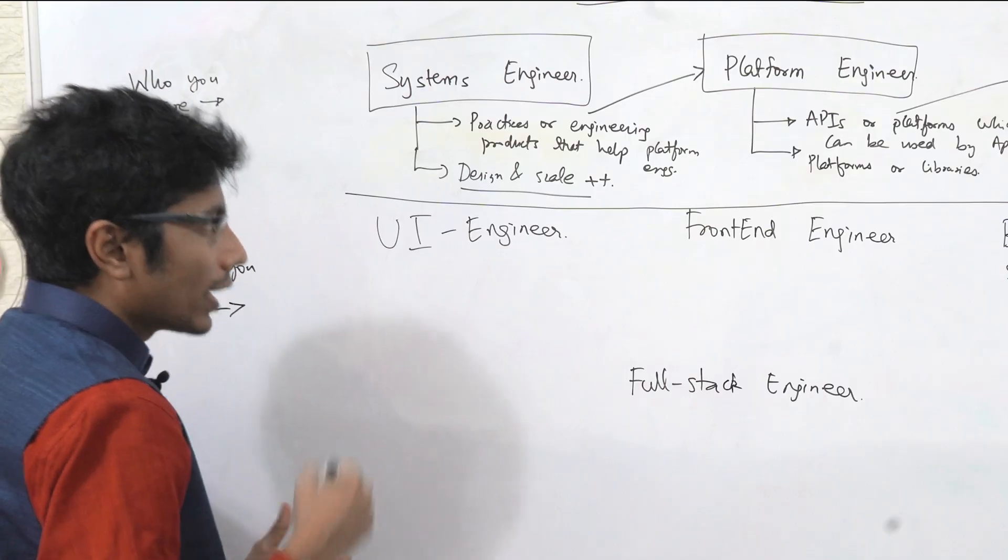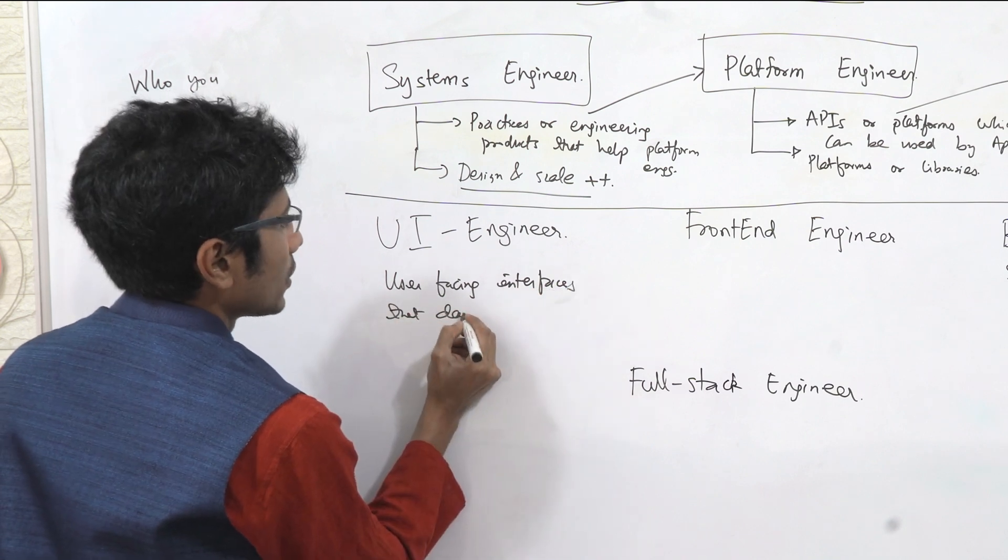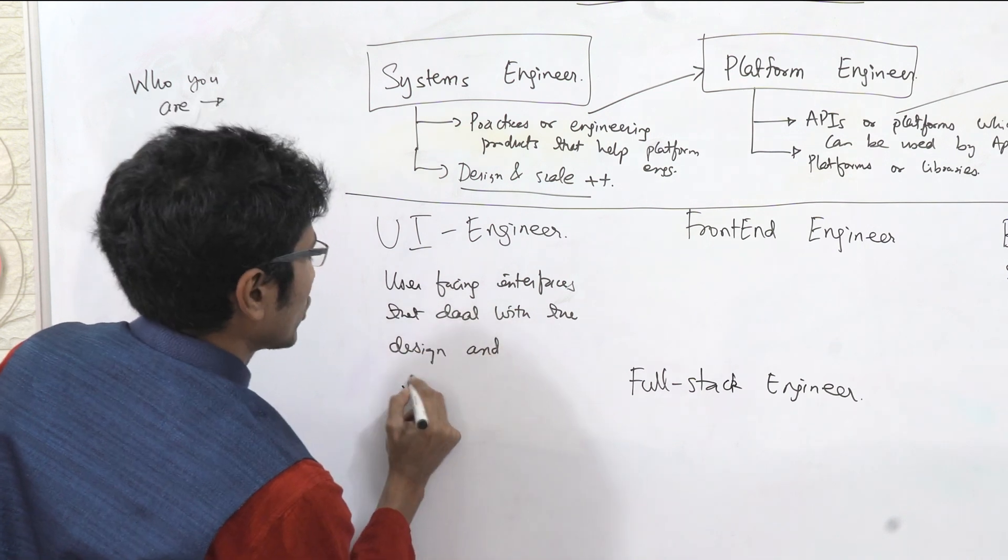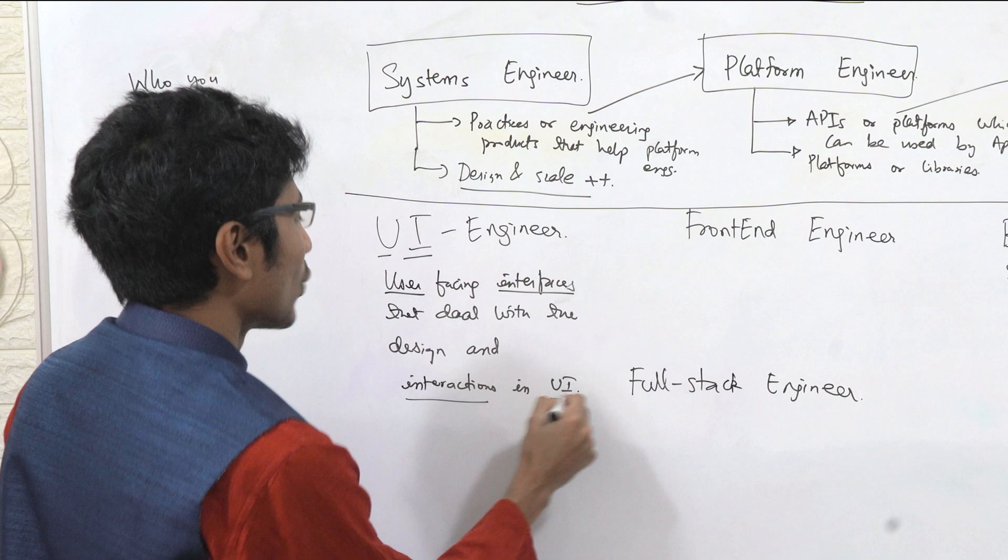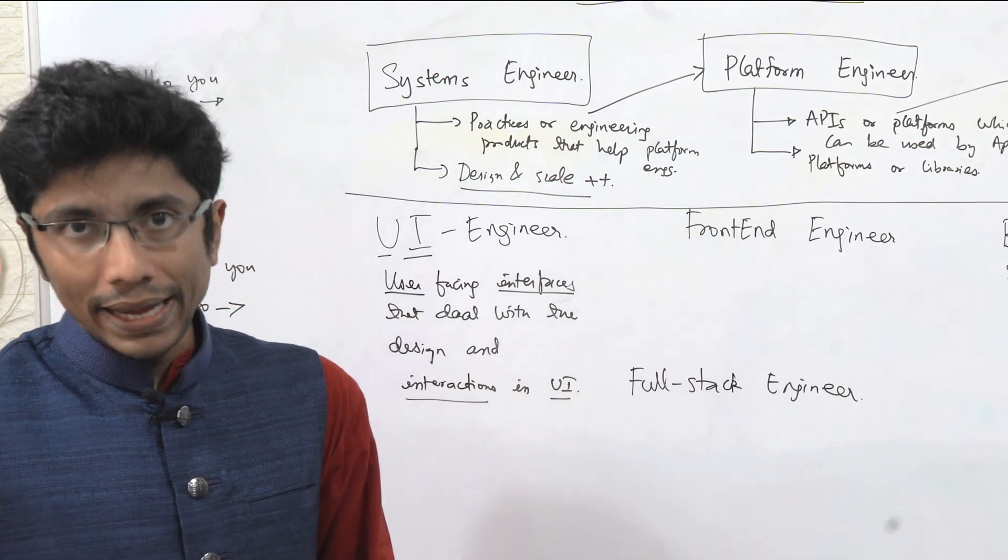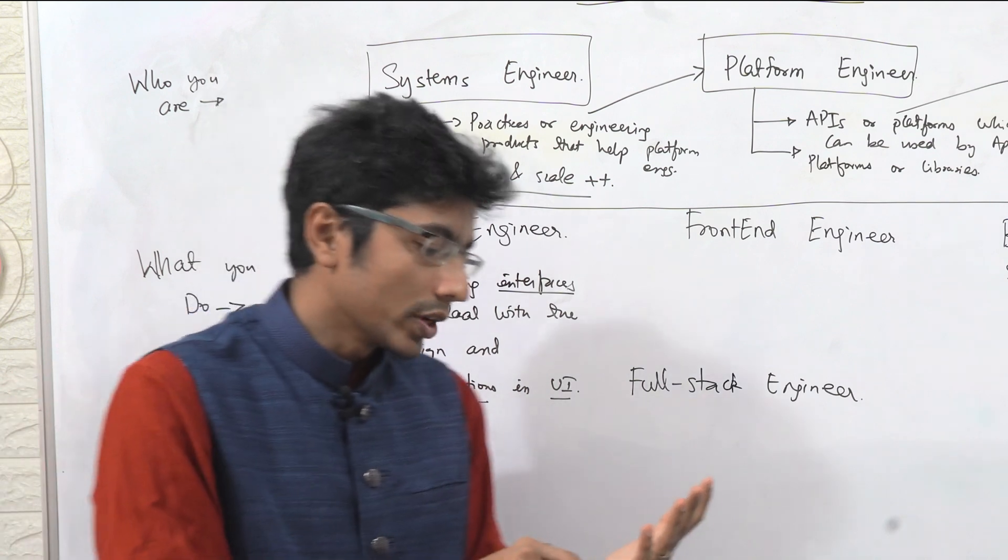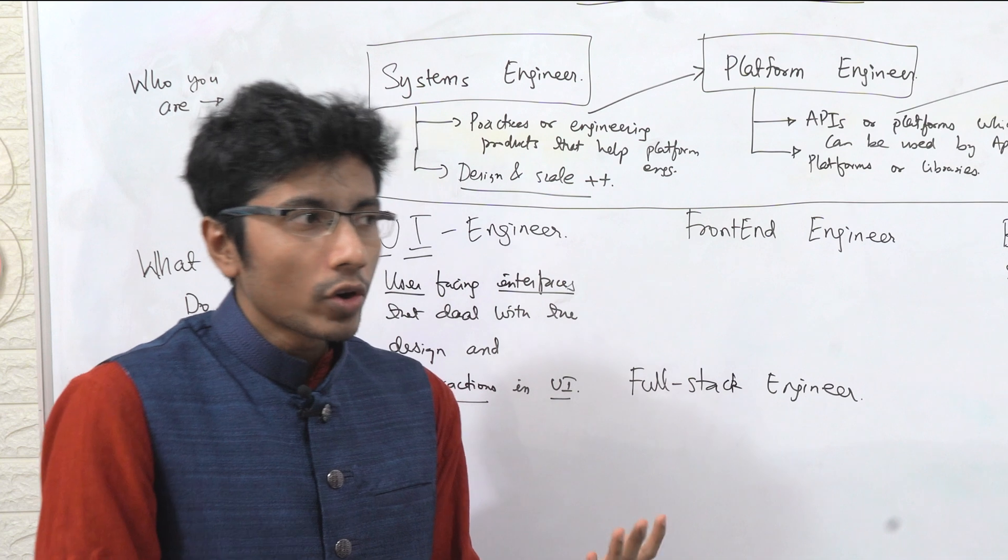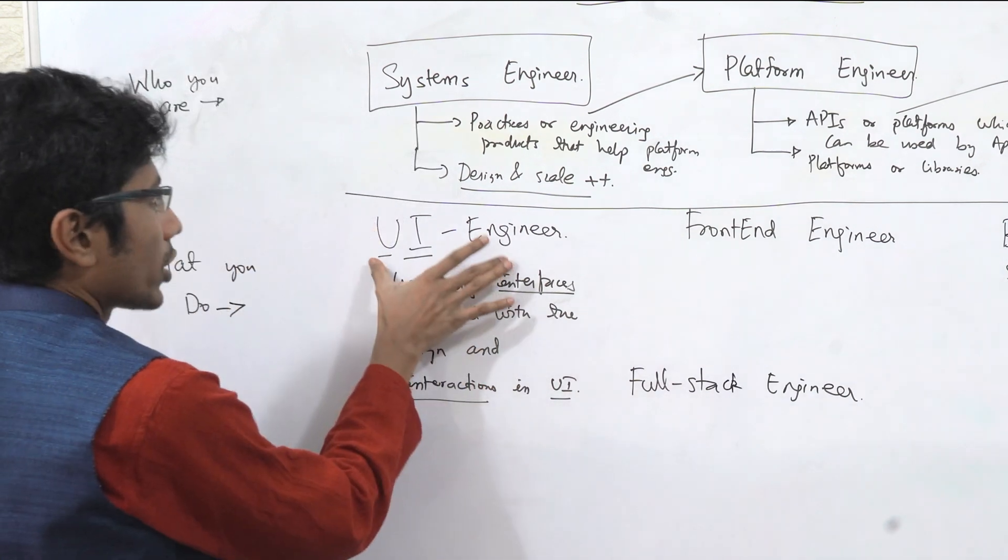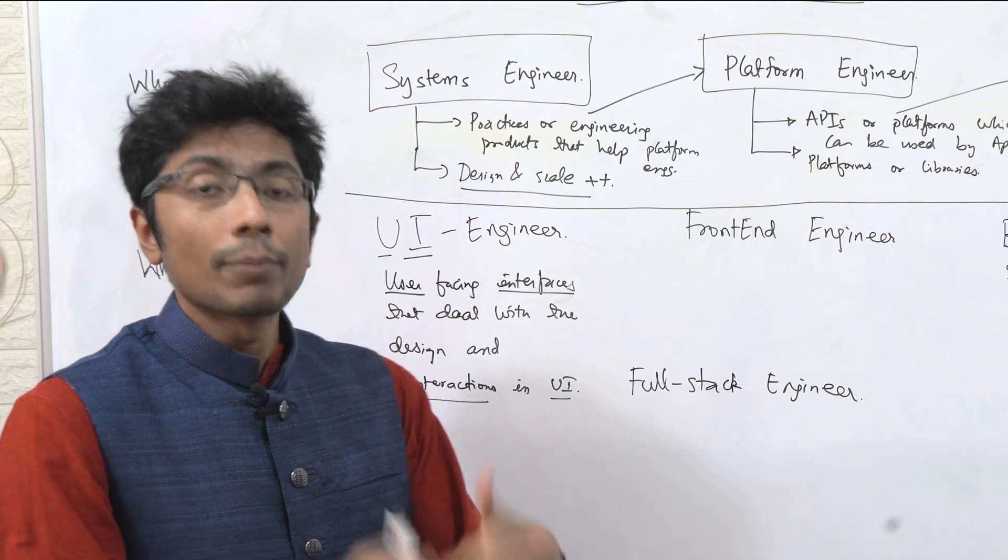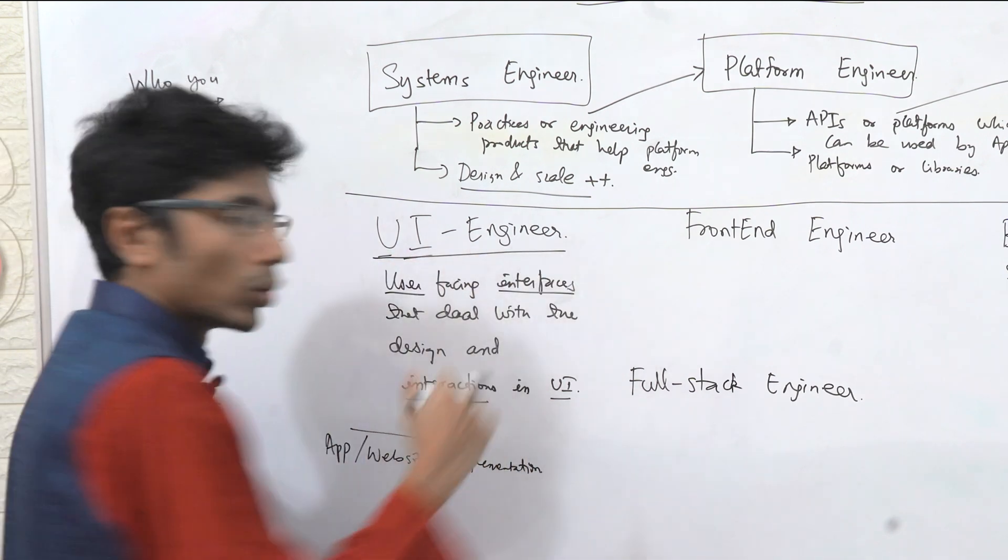Now let's talk about the UI engineer. You are likely to be writing user facing interfaces that deal with the design and interactions. Simply put, if there needs to be a page that has to be created or any kind of an interface that the user is going to use—take the example of Uber and you need to book an Uber—you have the interface that you speak to. That is what a UI engineer does. They code that, they make the look and feel come to life. Any kind of app or website implementation is in the shoulders of the UI engineer.